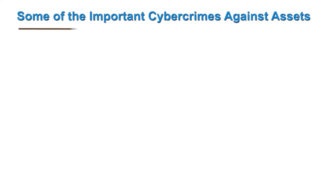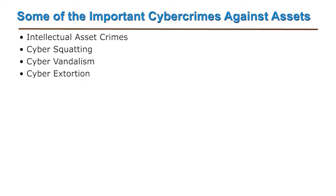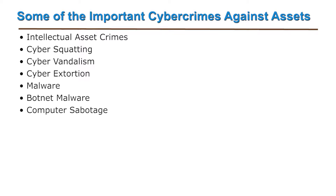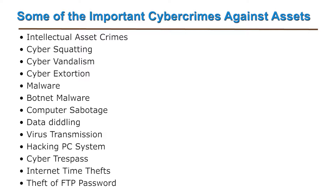This is the second category of cyber crimes, committed against almost all types of assets. Some of the important cyber crimes in this category are intellectual asset crimes, cyber squatting, cyber vandalism, cyber extortion, malware, botnet malware, computer sabotage, data diddling, virus transmission, hacking PC systems, cyber trespassing, internet time theft, and finally the theft of FTP passwords — file transfer protocol passwords. We will see most of these categories here.